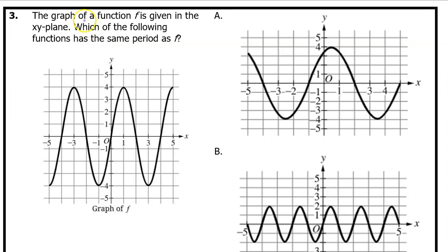Number 3. The graph of a function f is given in the xy plane. Which of the following functions has the same period as f? Here I've highlighted one period of function f in purple. We can see that the period of function f is 4. Sometimes it's easiest to measure the period from peak to peak. Either way, the period is 4.